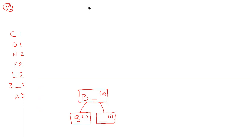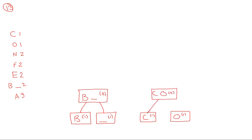Now C and O come down at the bottom of the tree. C has a frequency of one, O there was only one of those. Put them together and combine the frequencies to make C-O with a frequency of two. The frequency table now becomes: N is 2, F is 2, E is 2, B-space is 2, C-O is 2, and A is 3.